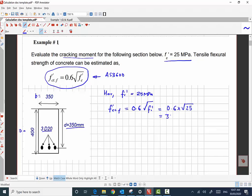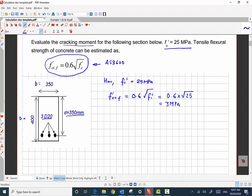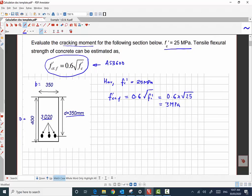So the tensile strength of the concrete will come as 3 megapascal. Now for this rectangular section we know the section modulus of this beam is bd² over 6, where b is the width of the beam 350 millimeter and overall depth of the beam is 400 millimeter.